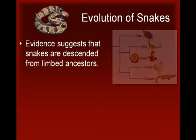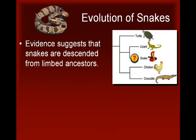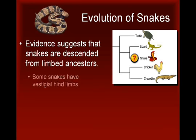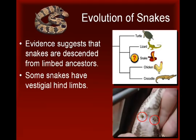Our third example involves the evolution of snakes. Evidence from the morphology and development of existing snakes suggests that they evolved from a limbed ancestor. Molecular evidence also supports this hypothesis, showing that, among living animal groups, snakes are most closely related to lizards. In fact, the most primitive existing snakes, pythons and boa constrictors, have tiny, nub-like legs beneath their skin, and minuscule half-inch claws that protrude out from their bodies.